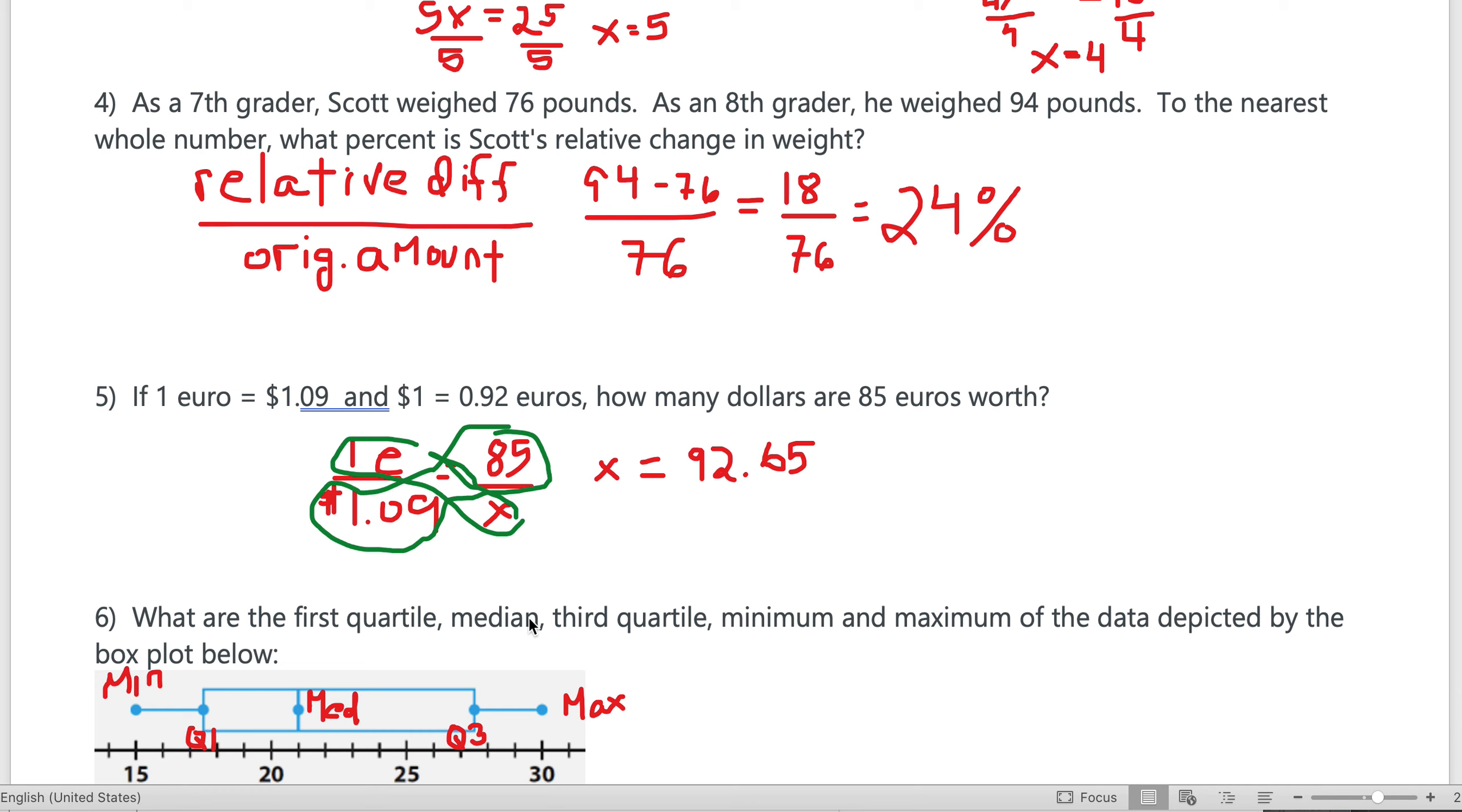This way is to solve proportionally: euros is to dollars as euros is to dollars. So one euro is a dollar nine—how many dollars is 85 euros? I put 85 in the top, cross multiply: one times x is just x, and 85 times 1.09 is 92.65, so x is $92.65.